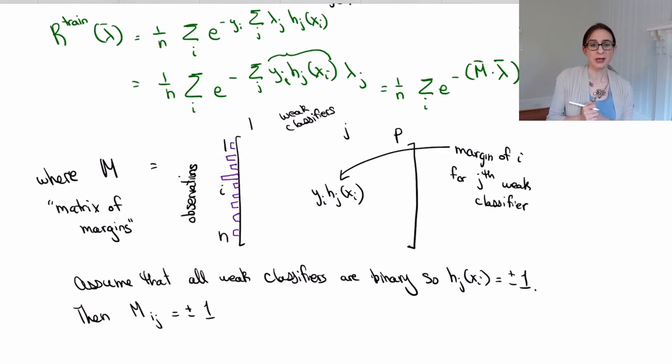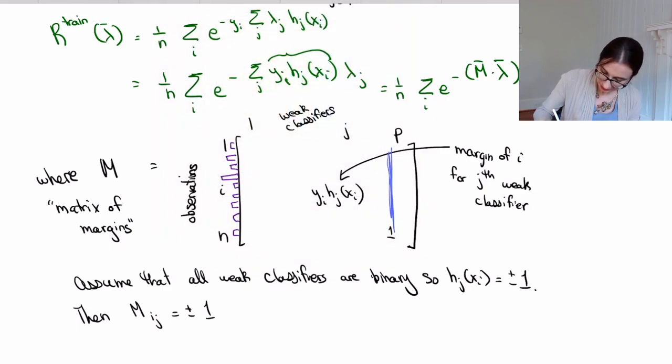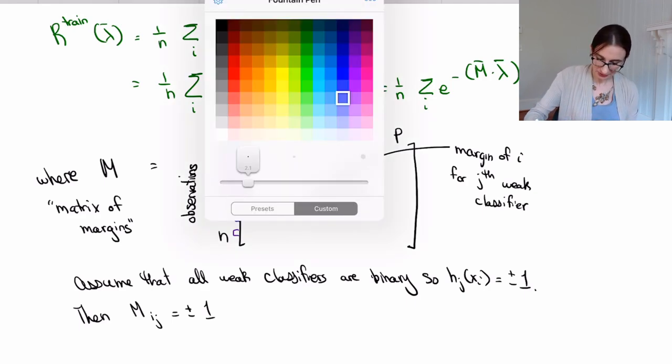So you can think of this matrix M as determining whether weak classifier J correctly classifies data point I. So if there's a one in this entry of this matrix, it means that weak classifier J correctly classifies data point I. And if there's a minus one there, it means that weak classifier incorrectly classified that data point. So I hope now you're familiar with this notation.